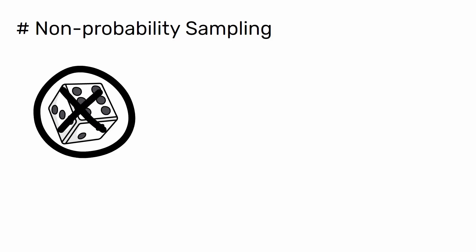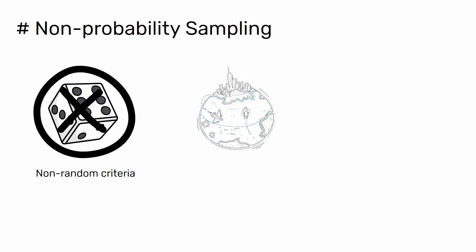Non-probability sampling techniques are often used in exploratory and qualitative research. In these types of research, the aim is not to test a hypothesis about a broad population, but to develop an initial understanding of a small or under-researched population.